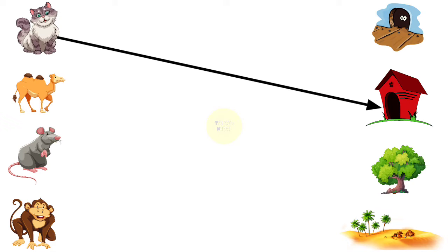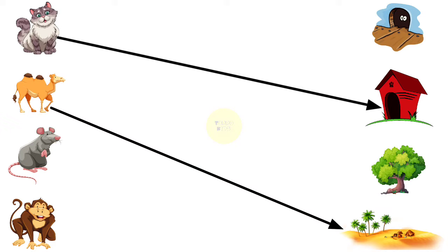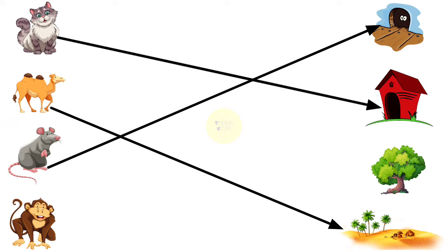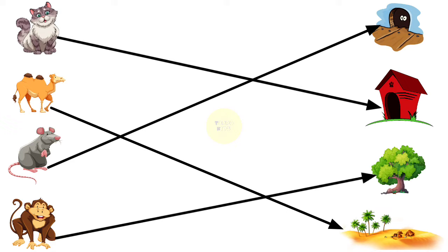Cat lives in cat tree. Camel lives in desert. Mouse lives in hole. Monkey lives on trees.